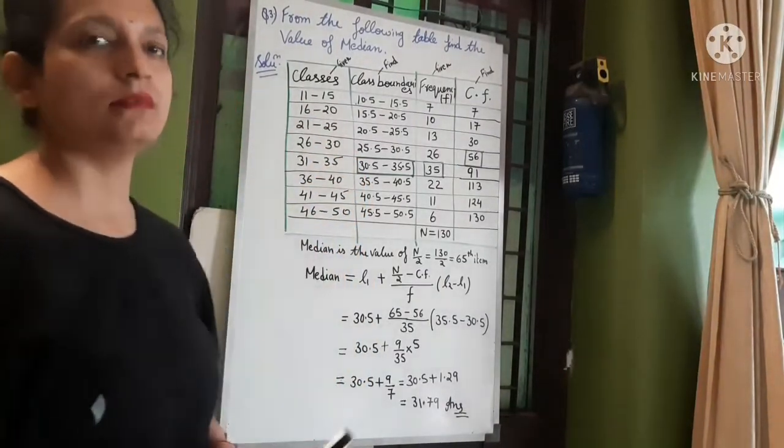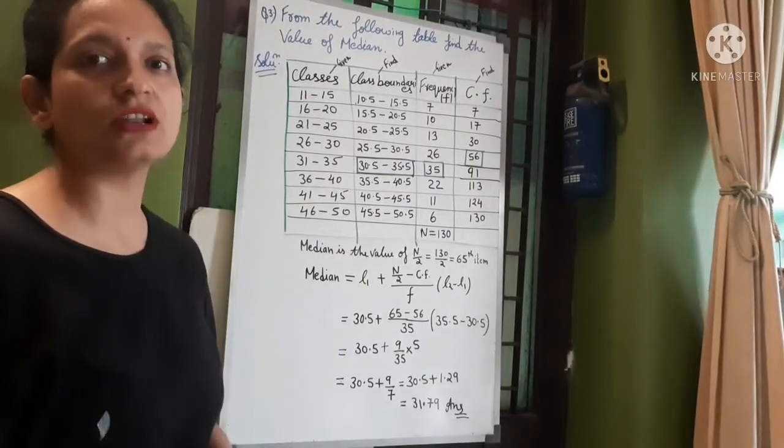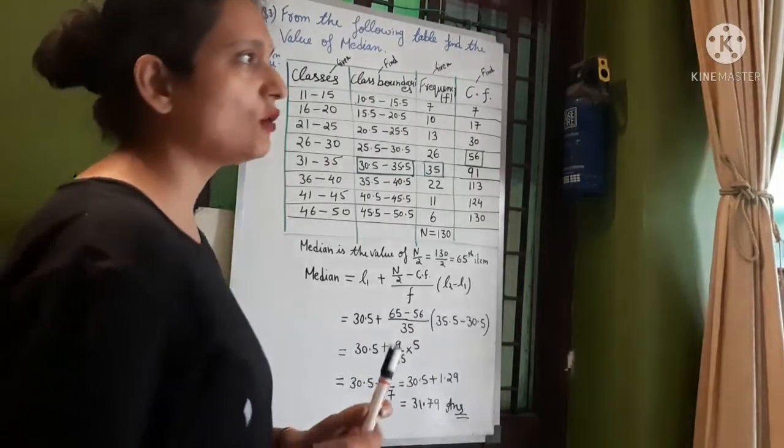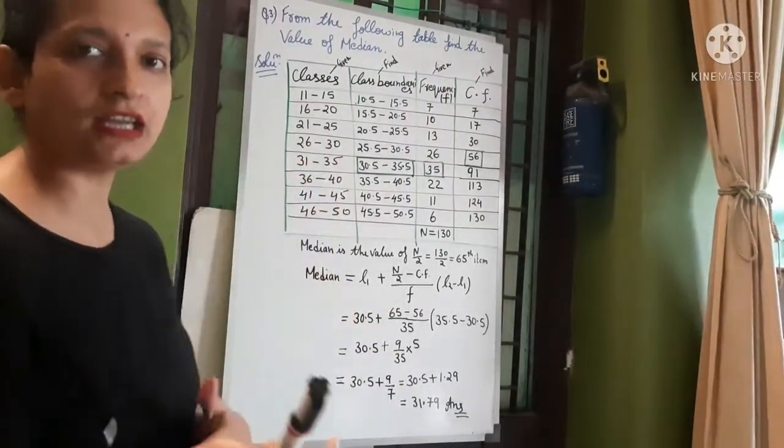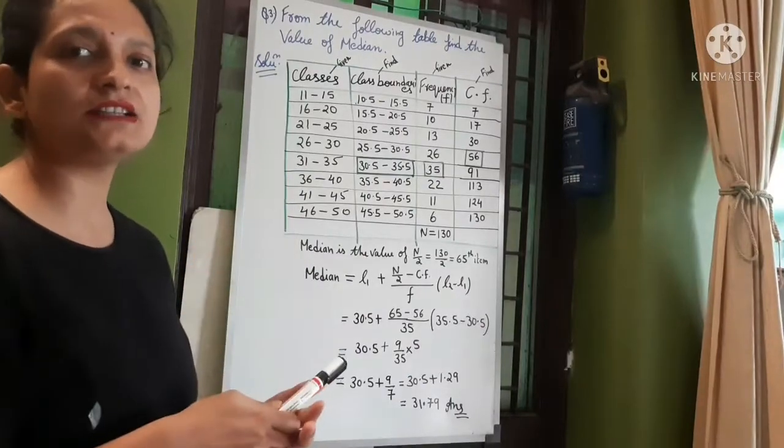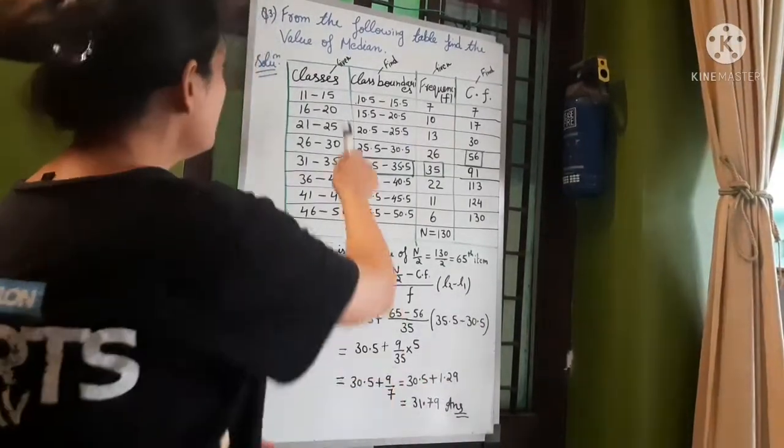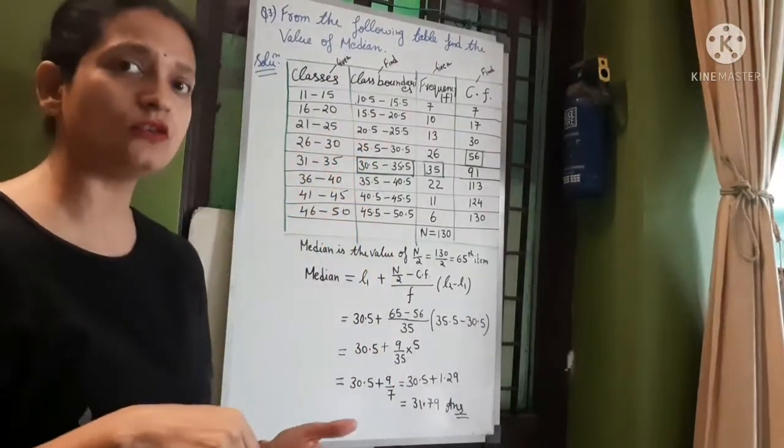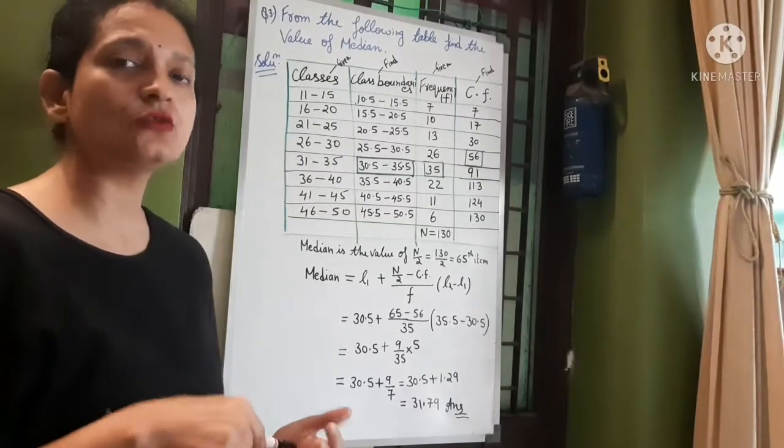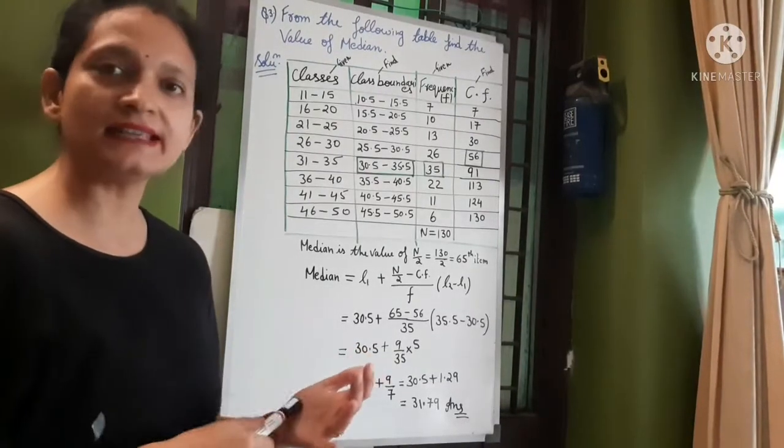So this is which classes? These are inclusive classes: from 11 to 15, and then next class starts 16 to 20. So when the number is next then 15 to 16, so this is the inclusive class. What is the exclusive class? Like 10 to 20,